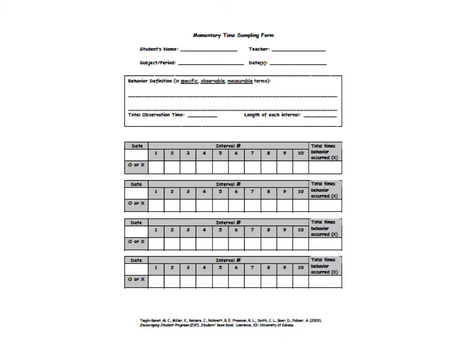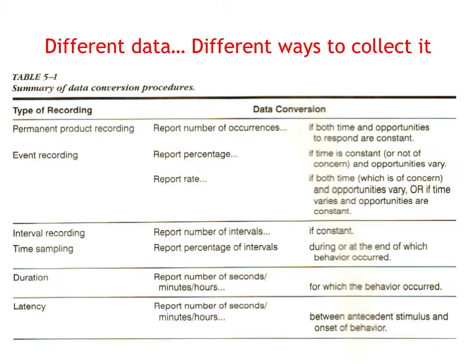Time sampling is very similar to interval recording, but you use larger intervals like two or three minutes. You set the timer for two or three minutes, and whenever the timer goes off, you look up and see if the child is engaging in the target behavior at that moment. If you see the target behavior at that moment, you mark it as an occurrence. You can use this summary as a reference when choosing data collection methods for your project.